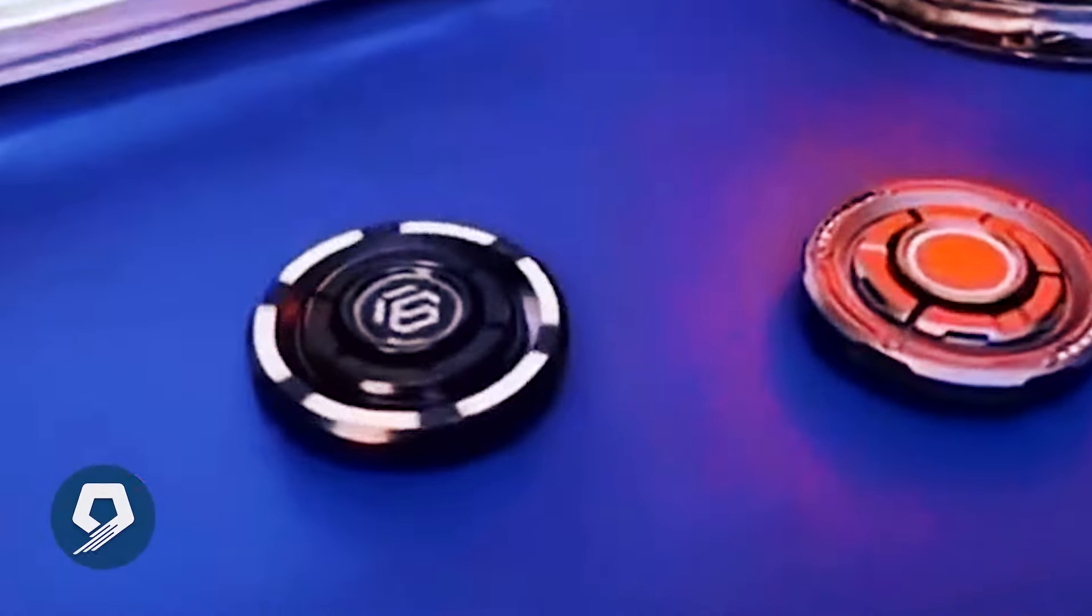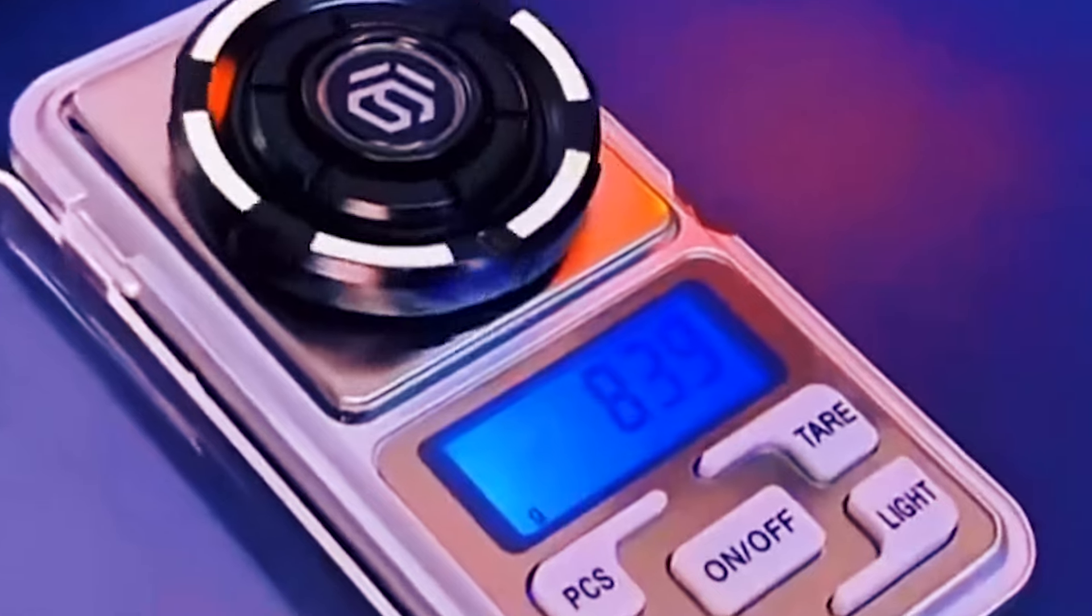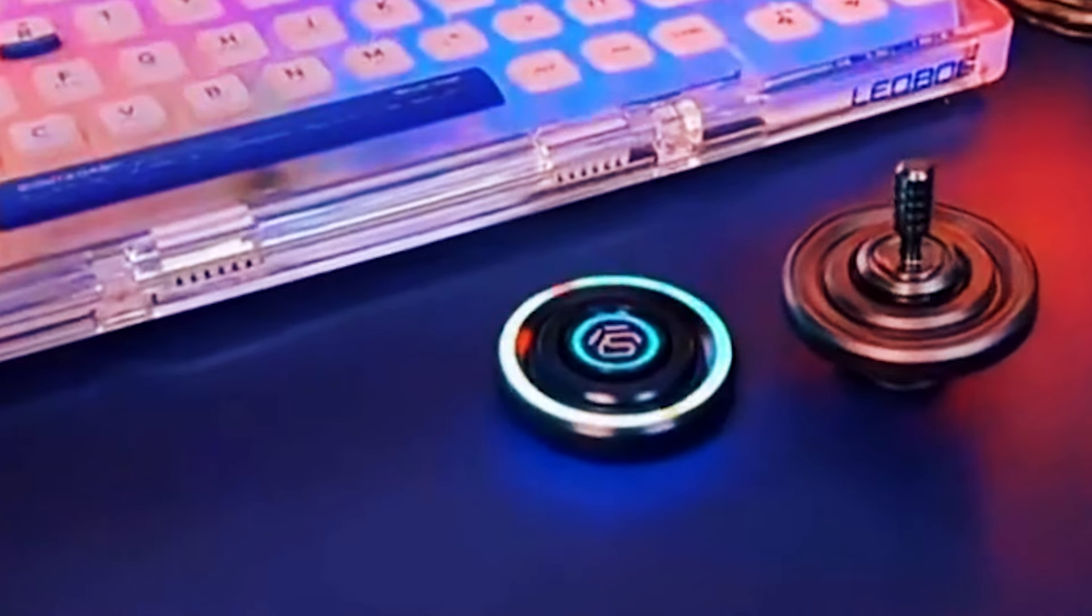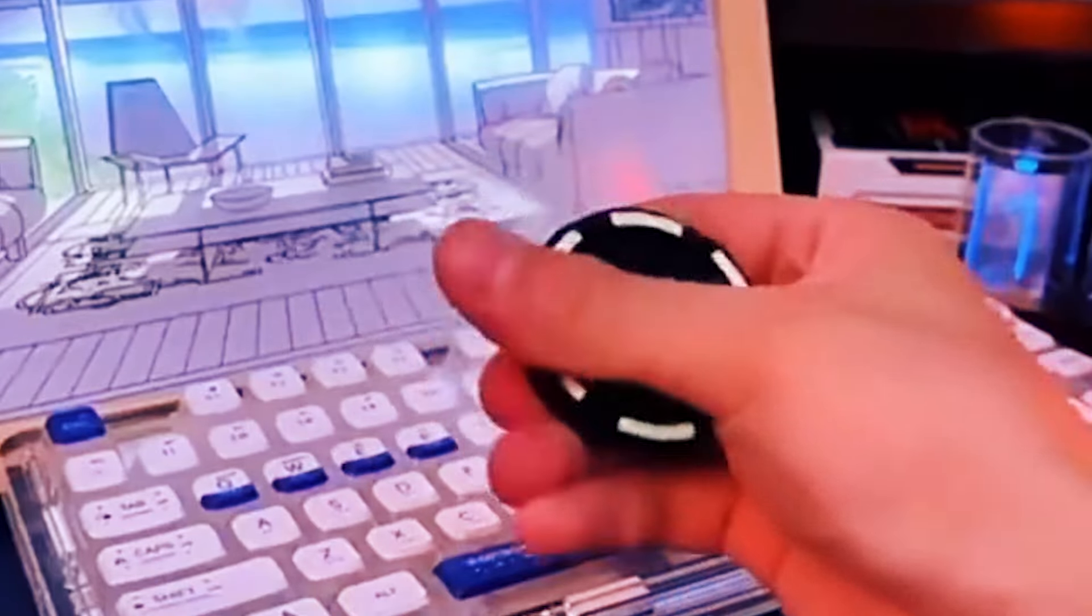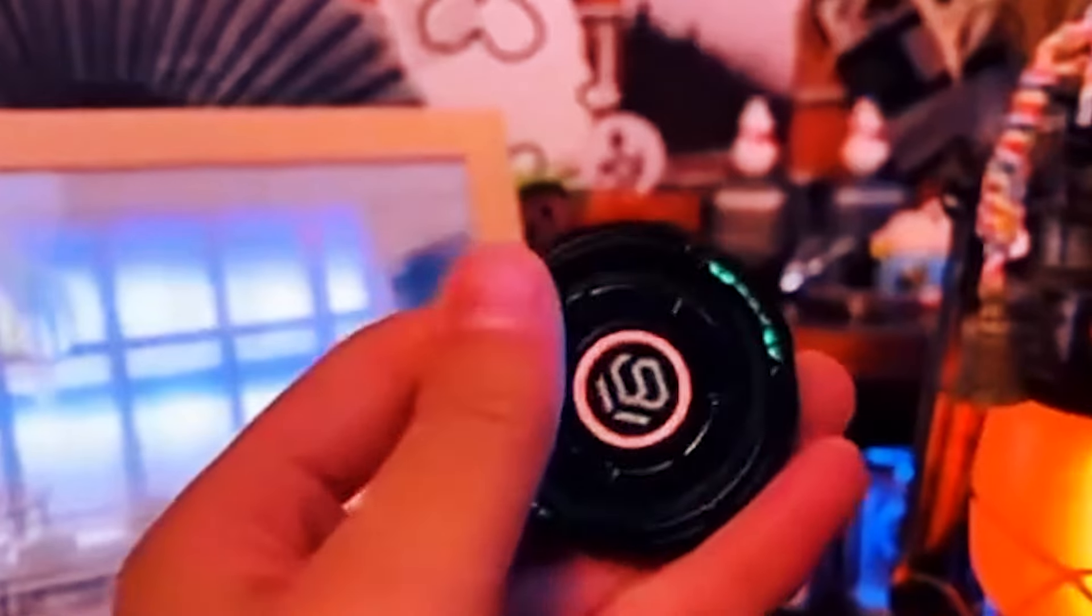The Andrelin Fidget Spinner is a mesmerizing EDC toy that combines mechanical ingenuity with a touch of cyberpunk aesthetics. With a one-click switch for light effects and a silent-bearing multi-layer mechanical structure, it offers a unique sensory experience. The full alloy design undergoes more than a dozen processes for a classic and cool appearance. The A side features a mechanical roulette, while the B side showcases RGB-3 color-dazzling light effects. Its compact and durable construction makes it a stylish stress reliever for both kids and adults, adding a touch of futuristic flair to everyday moments.